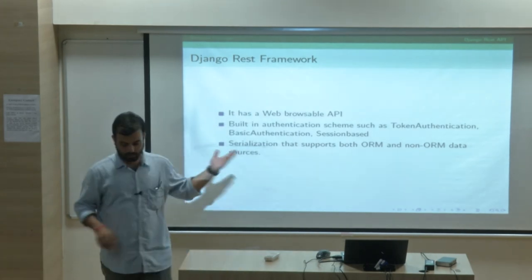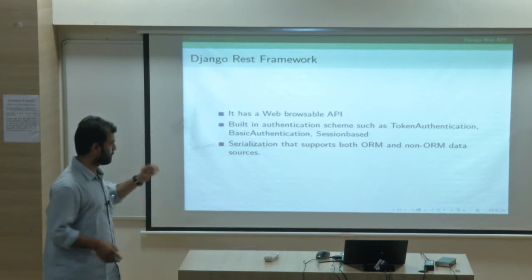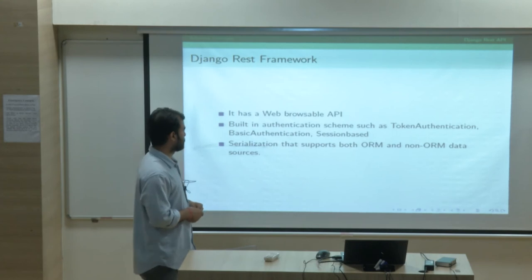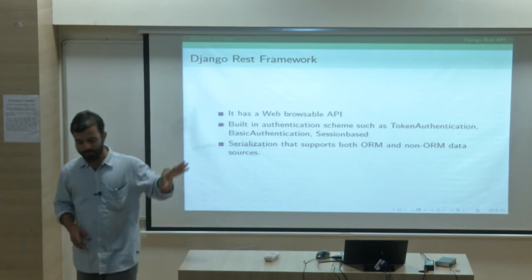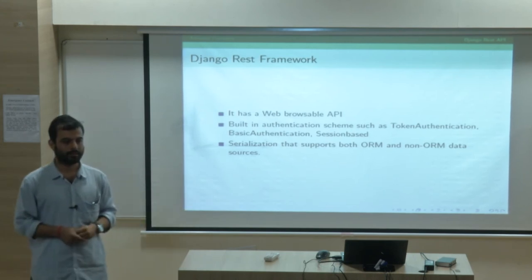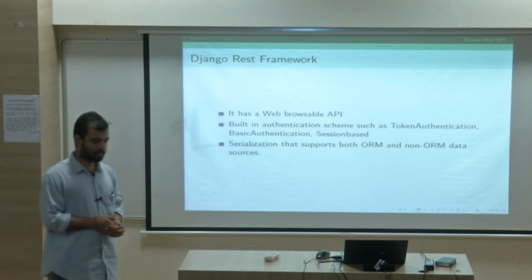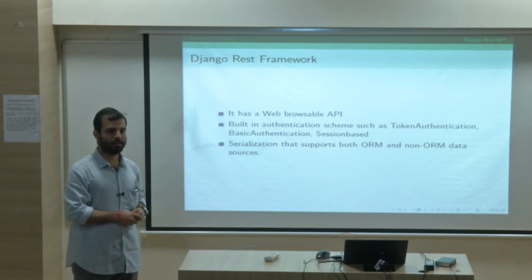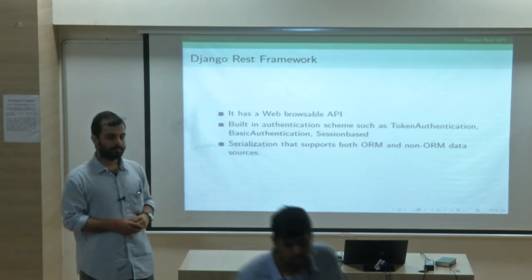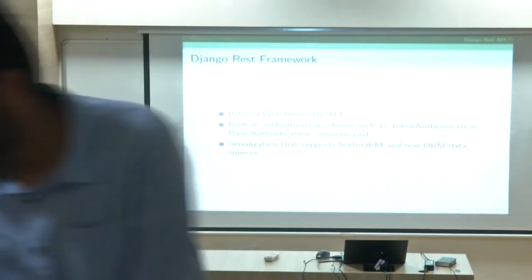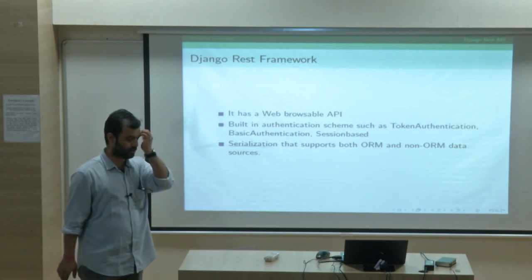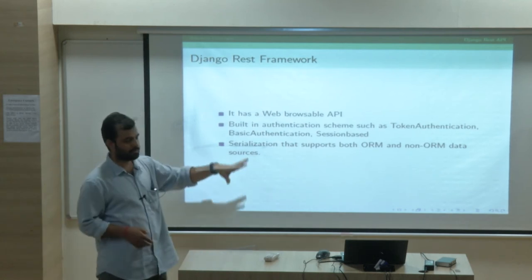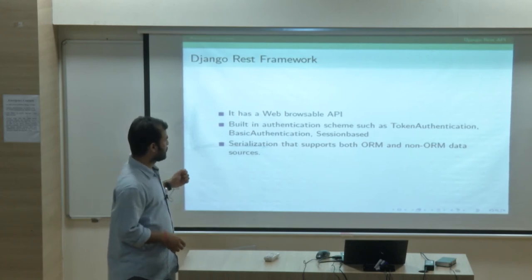Django REST Framework has a browsable API — I'll show you in my website how I've implemented REST APIs and what browsable API looks like. You can literally browse your REST API through a built-in feature. There are many kinds of authentication available. When you log in to Uber, they have many services — payment, gateway, and others — but you log in just once: single authentication. That authentication can be token-based or session-based, usually token-based. There are different token-based authentication options like OAuth. There's single authentication handling all the APIs.